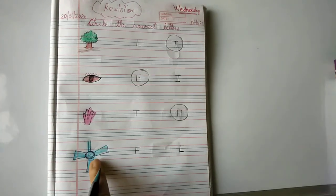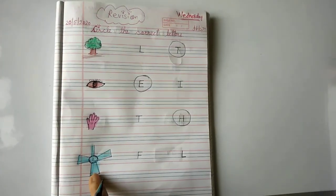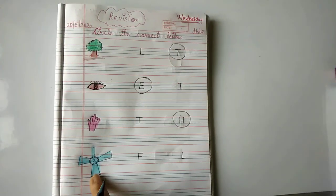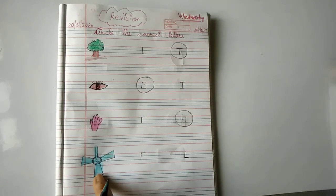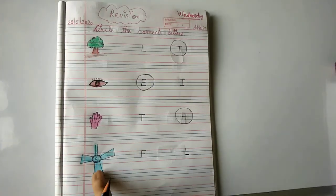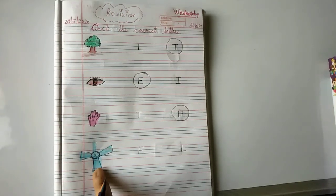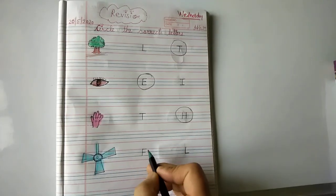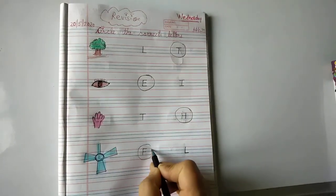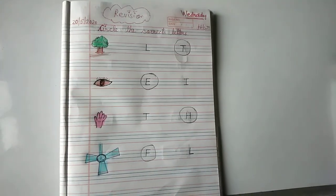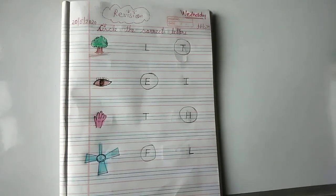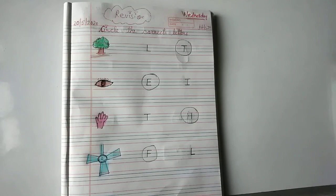Now look at the next picture and that is a fan. Yeh kya hai? Fan. Now you tell me, which letter does fan start with? F for fan or L for fan? Tell me. I will tell you, it's F for fan. So it's your revision, circle the correct letter is done.